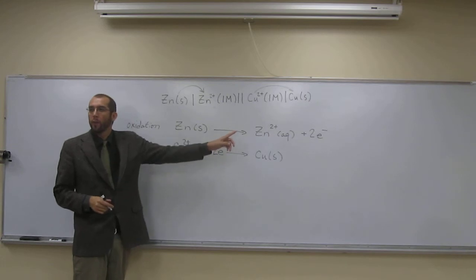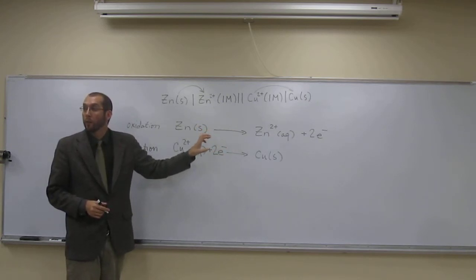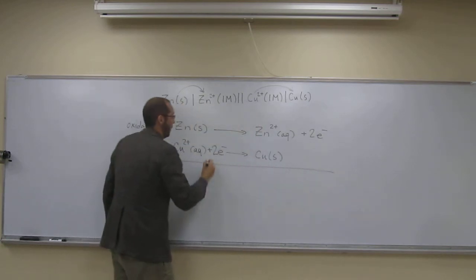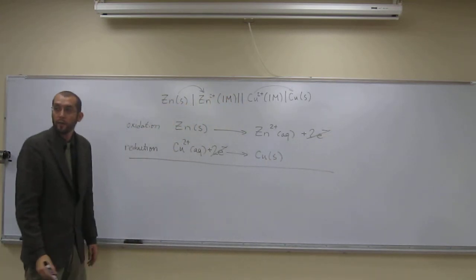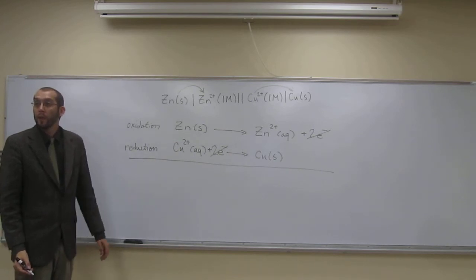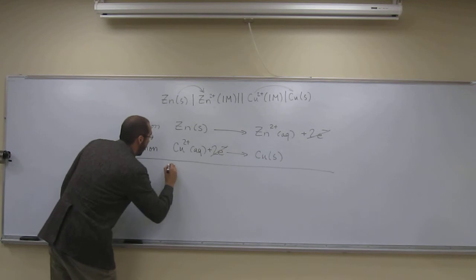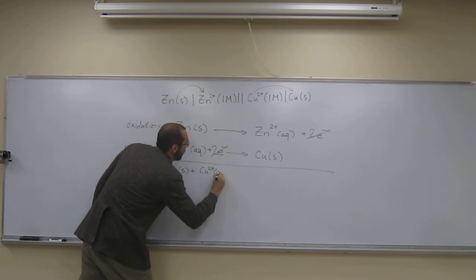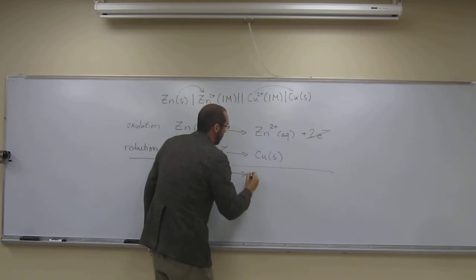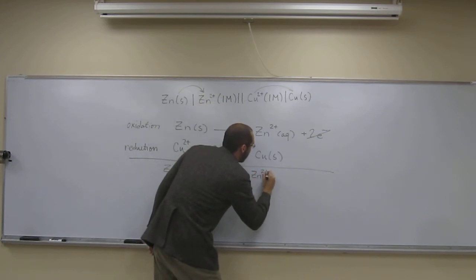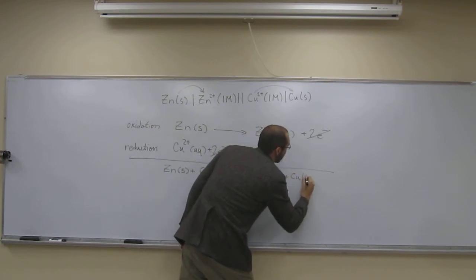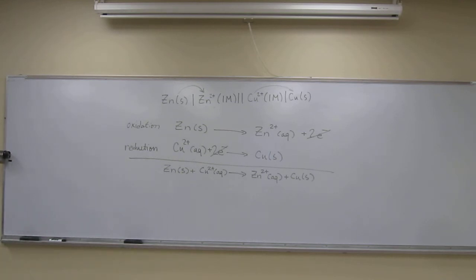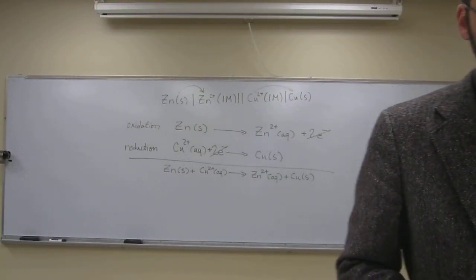This one's really convenient because both of them are two, so the electrons are already balanced for us. We can just add these two reactions up, canceling out our electrons. When we add those up, we get the balanced redox reaction: Zn(s) + Cu²⁺(aq) → Zn²⁺(aq) + Cu(s). Are there any questions on that particular one? Hopefully it makes sense.